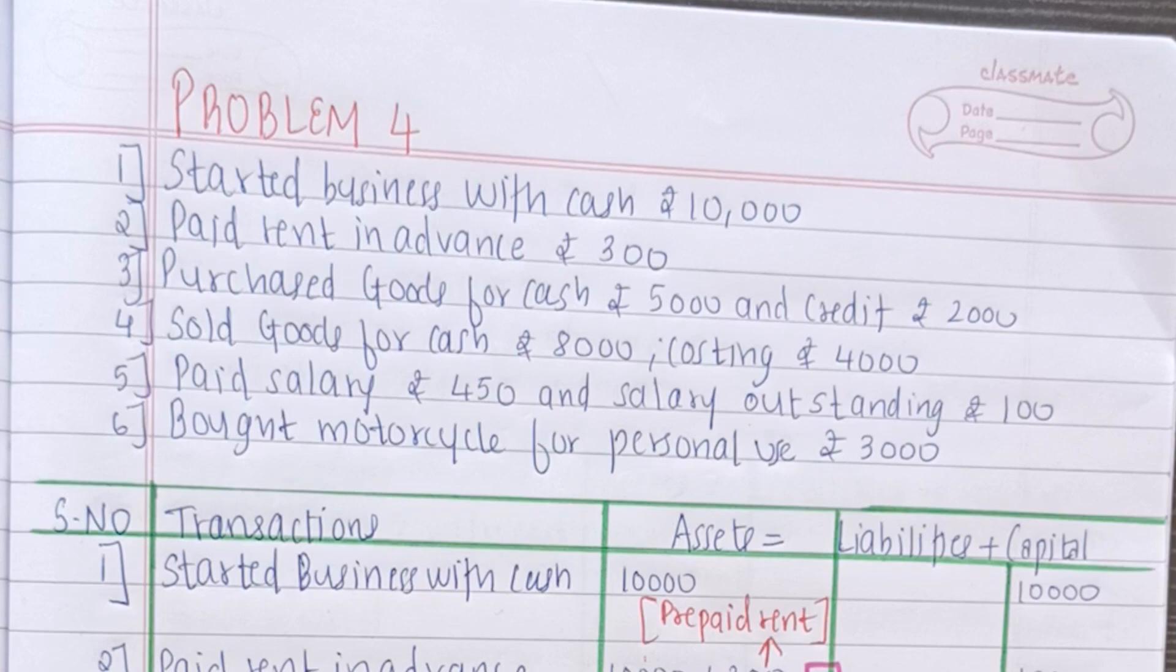The next is rent paid in advance Rs.300. Now as we can see it's mentioned in advance. Just because it is in advance it means it is prepaid rent. It will only be deducted from cash and not capital. Why? Because it is no longer an expense. Only expenses are recorded on the capital side.